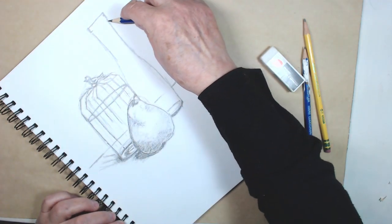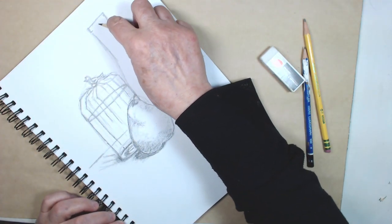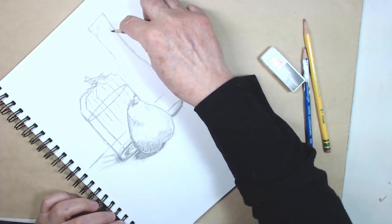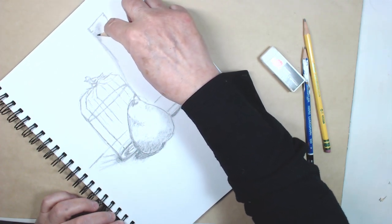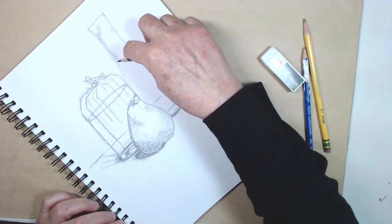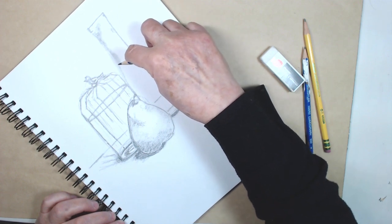And the glass vase is a little bit harder to figure out where the shadows are, but I can kind of see some reflections over here. So I'm going to pick those out with my shading.